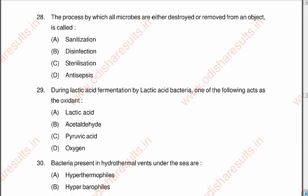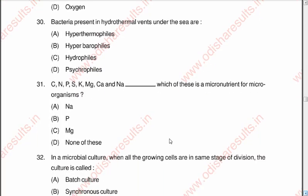Question 30: Bacteria present in hydrothermal vents under the sea are A hyperthermophiles, B hyperperophiles, C hydrophiles. Question 31: Among the elements C, N, P, S, K, Mg, Ca, and Na, which is a micronutrient for microorganisms? Options are A Na, B P, C Mg, D none of these. The correct option is C, Mg — that is magnesium.